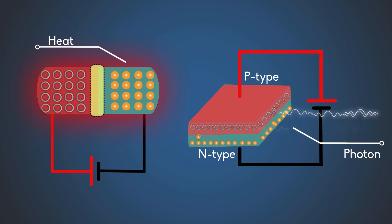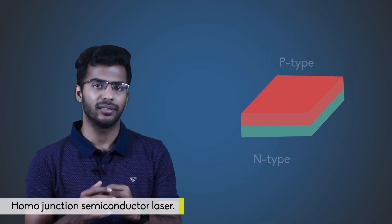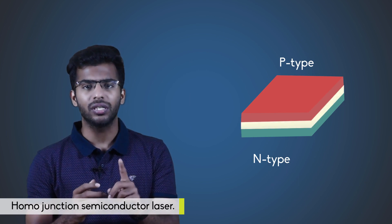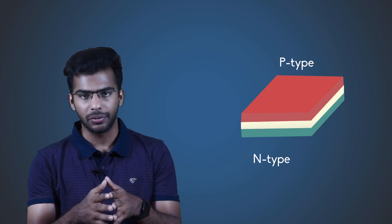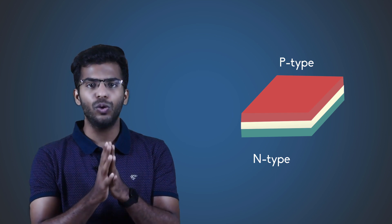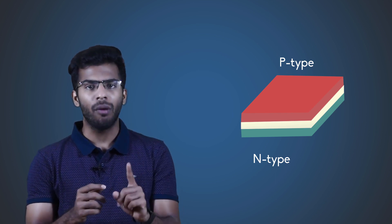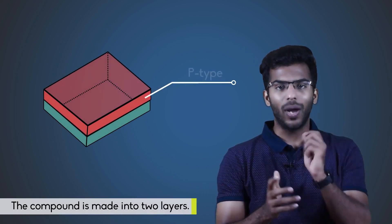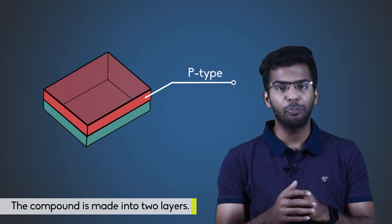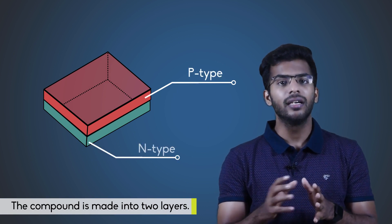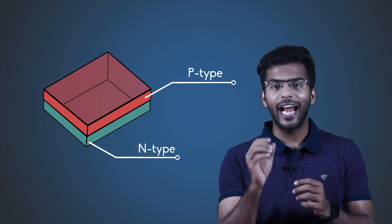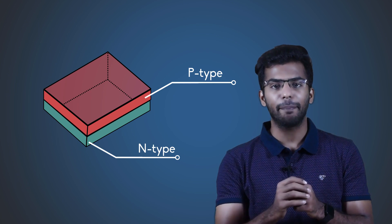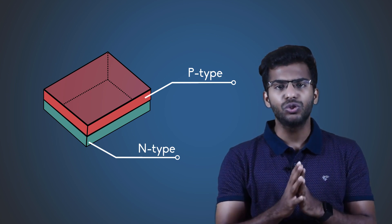Now, let us learn about the construction of gallium arsenide laser. Gallium arsenide laser falls under the category of homojunction semiconductor laser, meaning there is only one junction separating the P-type and N-type regions. These homojunction lasers are made of only one compound such as gallium arsenide. The compound is made into two layers: one layer heavily doped with P-type impurities and the second layer heavily doped with N-type impurities.